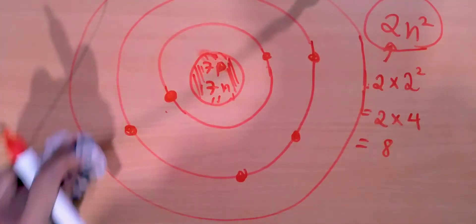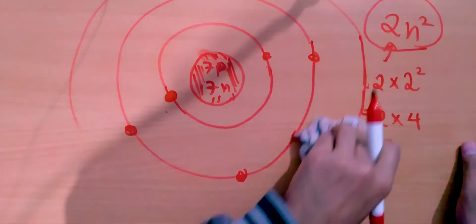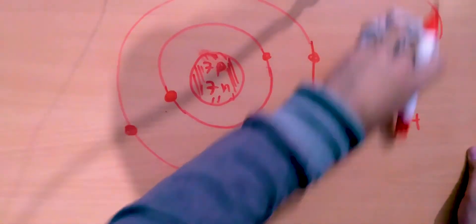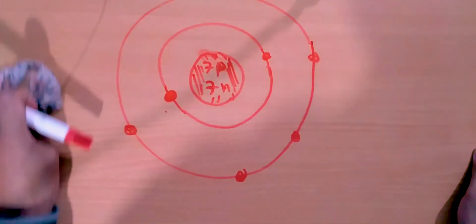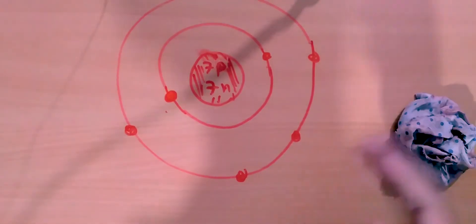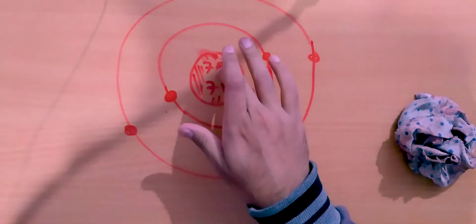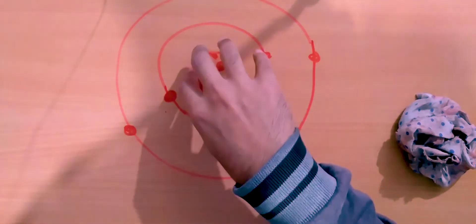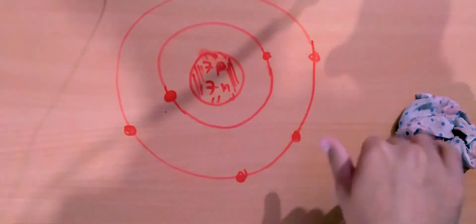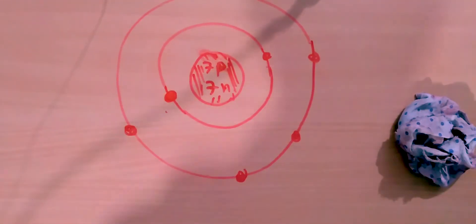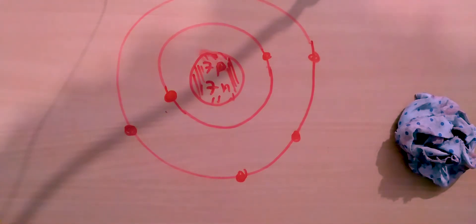I have five remaining electrons and the second shell can hold up to eight, so I fit all five there: one, two, three, four, five. The third orbit is not needed and remains empty, as do all shells beyond it. So this atom has seven protons and seven neutrons in the nucleus, with two electrons in the first shell and five in the second — a stable atom. That is how we fill electrons into the various orbits.